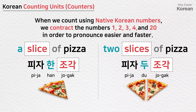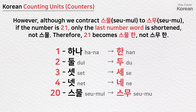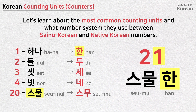When we count using native Korean numbers, we contract the numbers 1, 2, 3, 4, and 20 to pronounce them easier and faster. 하나, 둘, 셋, 넷, 스물 is shortened to 한, 두, 세, 네, 스무. However, although we contract 스물 to 스무, if the number is 21, only the last number word is shortened, not 스물. Therefore, 21 becomes 스물 한, not 스무안.